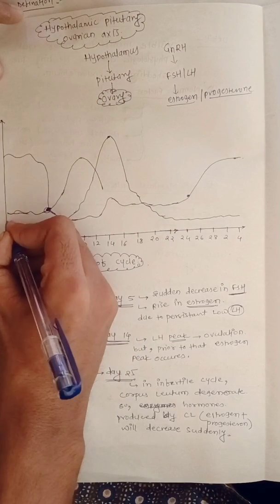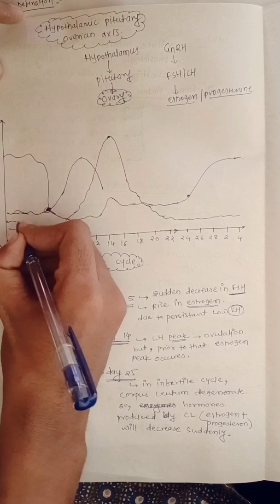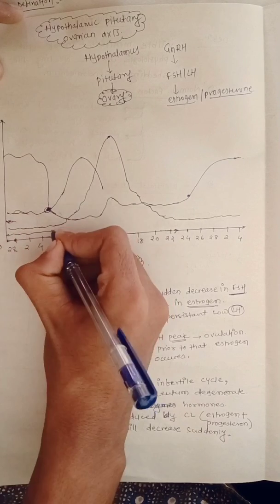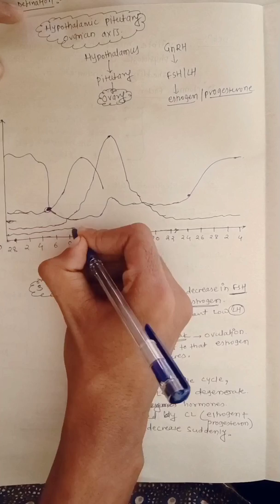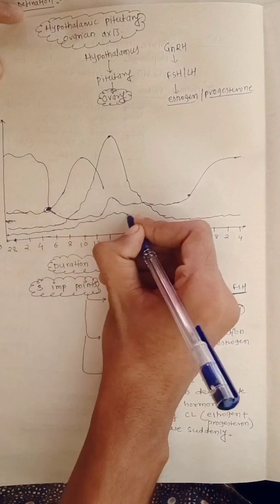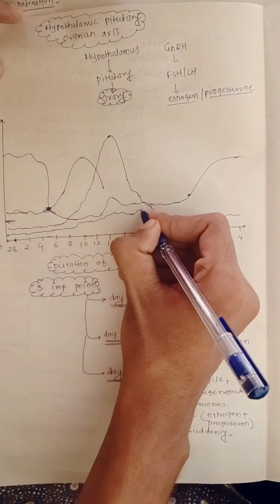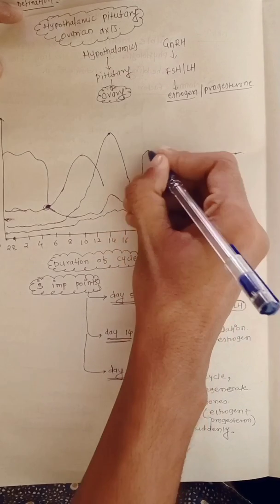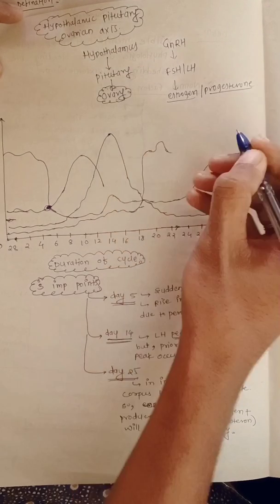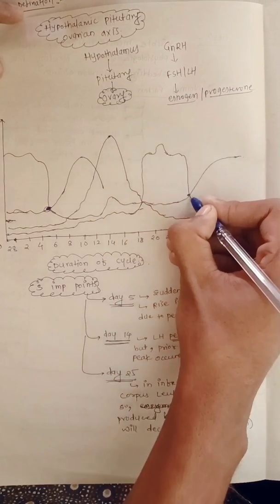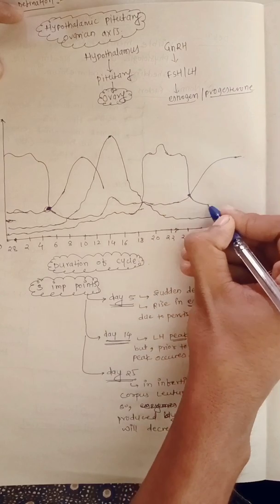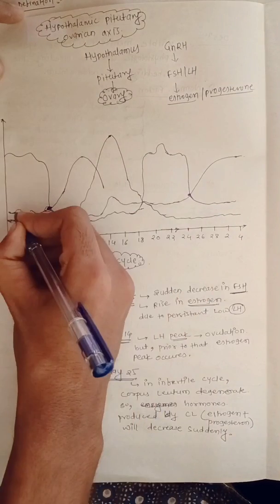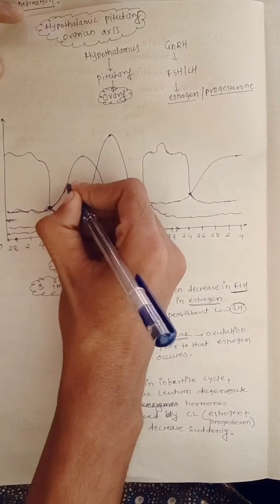For LH: during day five, LH is low, and after the estrogen peak there is an LH peak occurring on day fourteen. After that LH peak, LH levels will be low again. For progesterone: during the first fourteen days, progesterone will be low, and after ovulation, due to formation of the corpus luteum, progesterone levels will rise. On day twenty-five, when the corpus luteum degenerates, progesterone will come down.